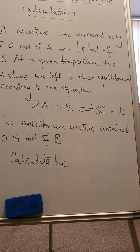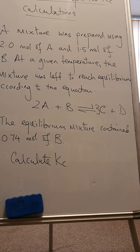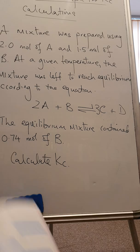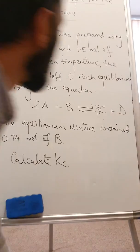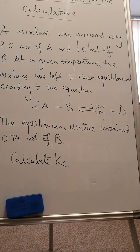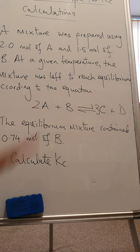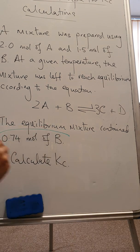A mixture was prepared using 2 moles of A and 1.5 moles of B. At a given temperature, the mixture was left to reach equilibrium according to the equation 2A plus B forms 3C plus D.